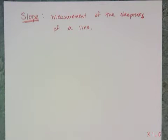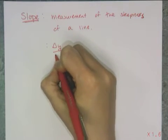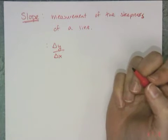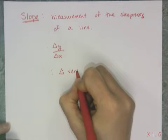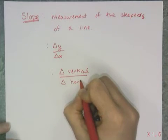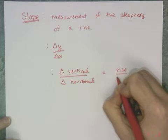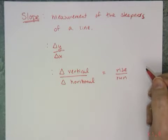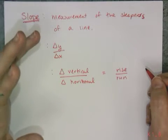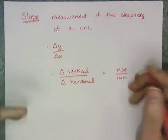Now it's time to talk about the formal definition of slope and how to calculate it. Slope is a measurement of the steepness of a line, and it is defined as the change in y over the change in x. It's also the change in the vertical over the change in the horizontal, and you'll also hear it as the rise over the run.